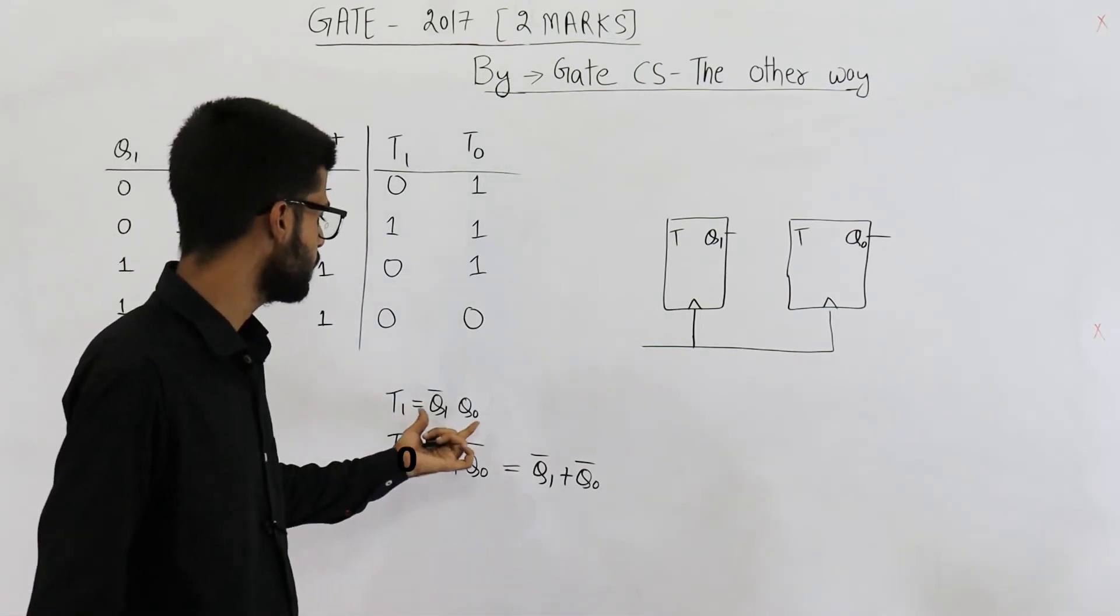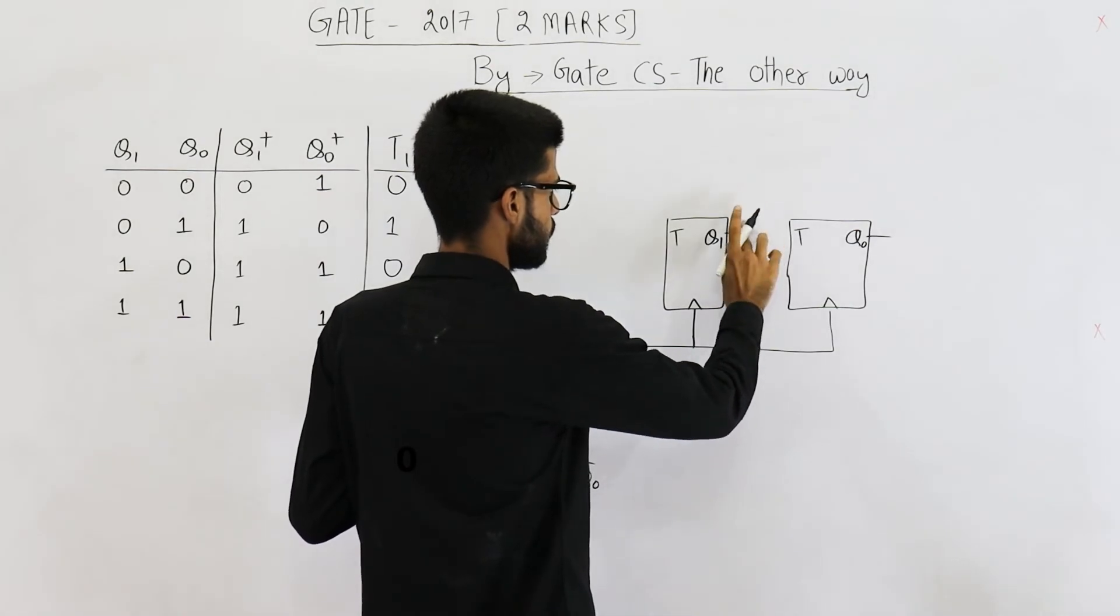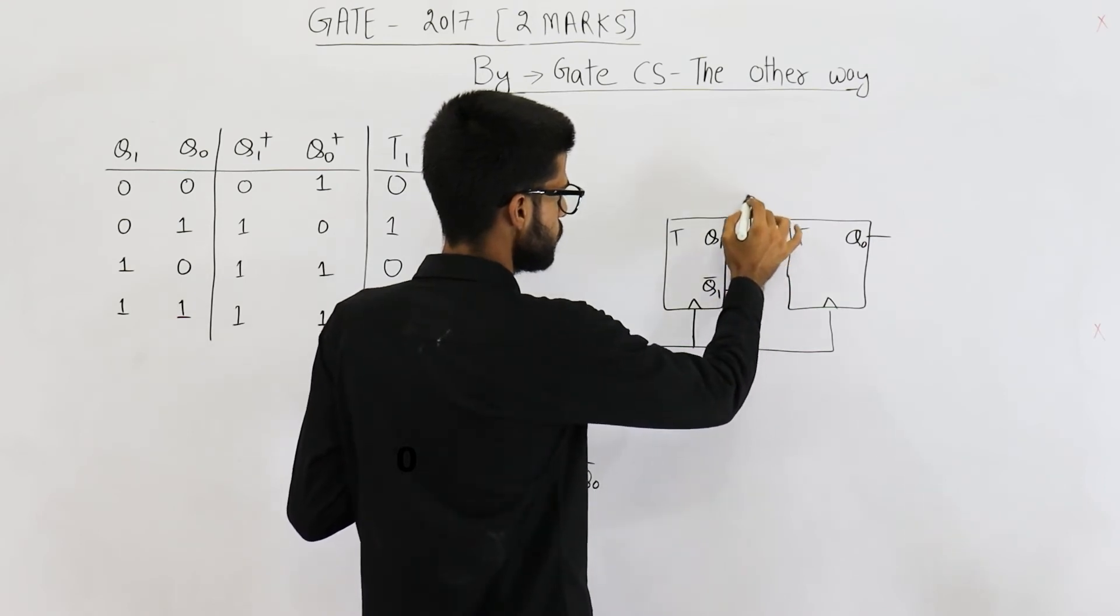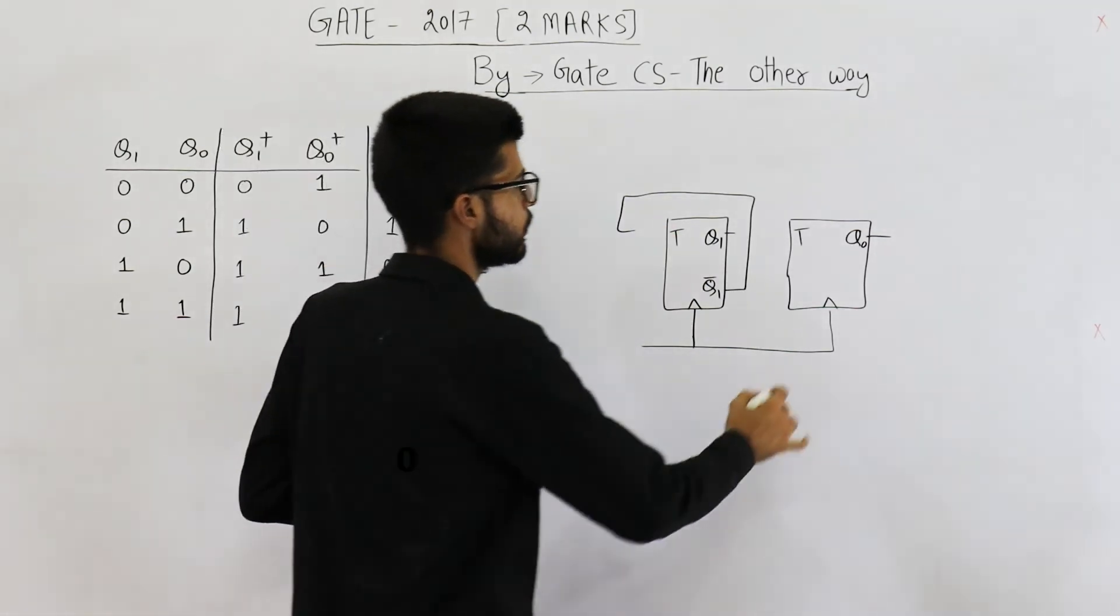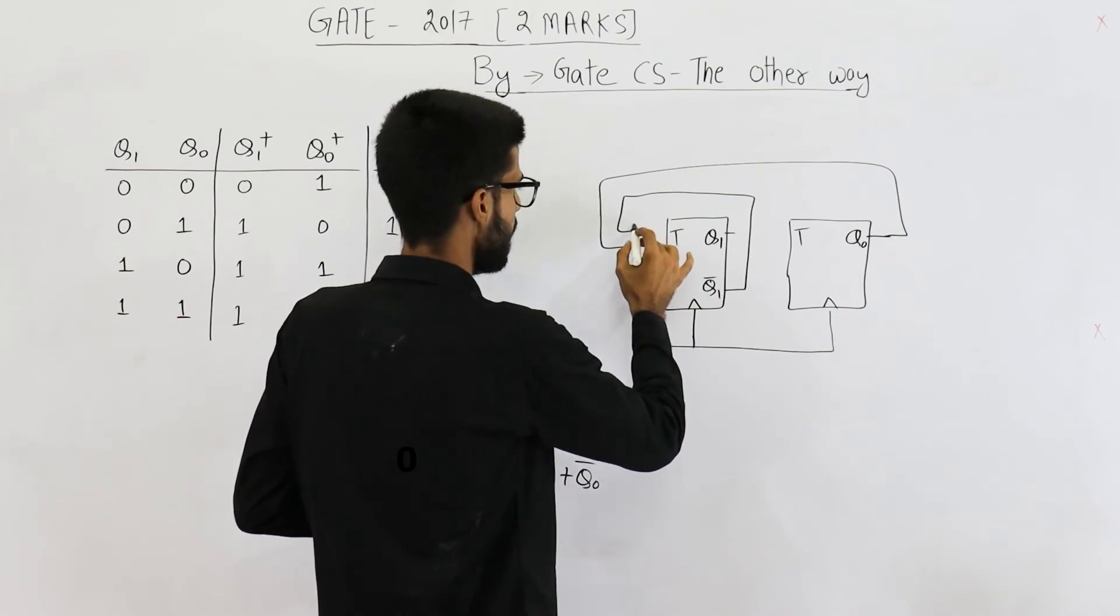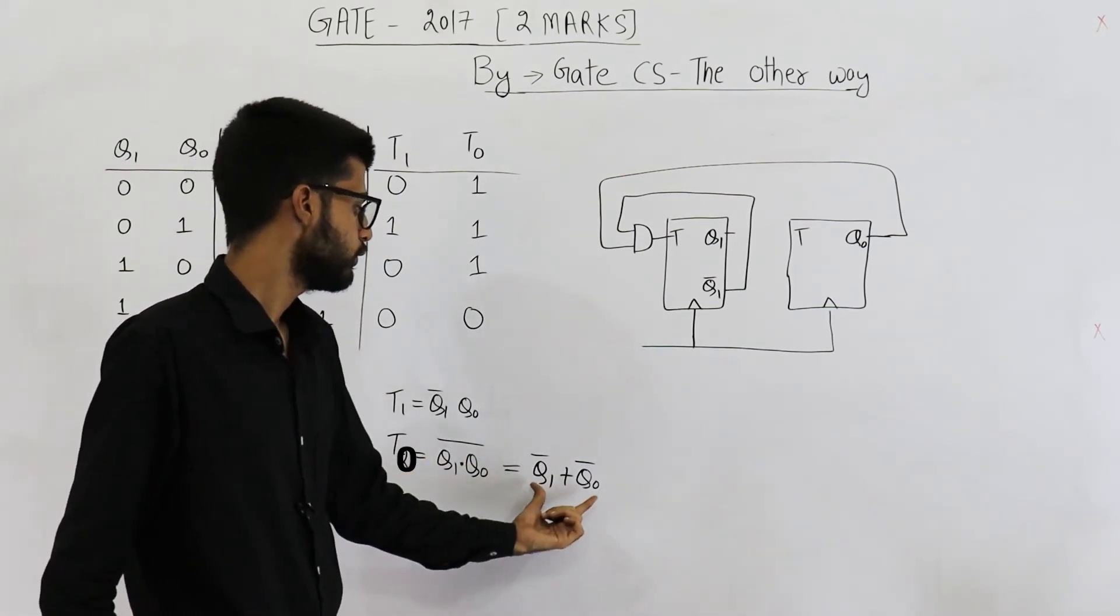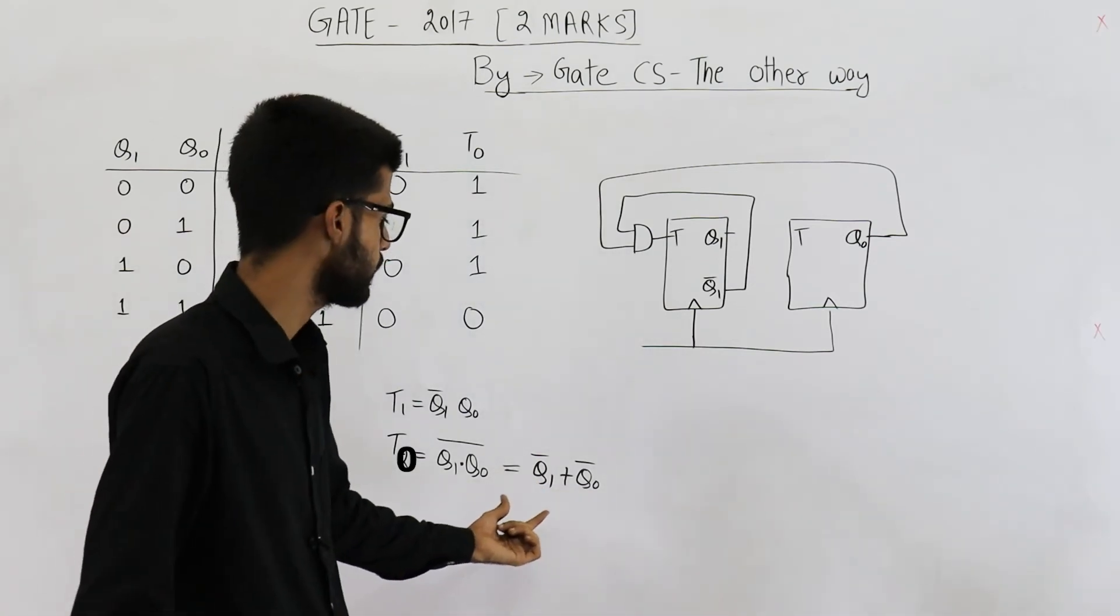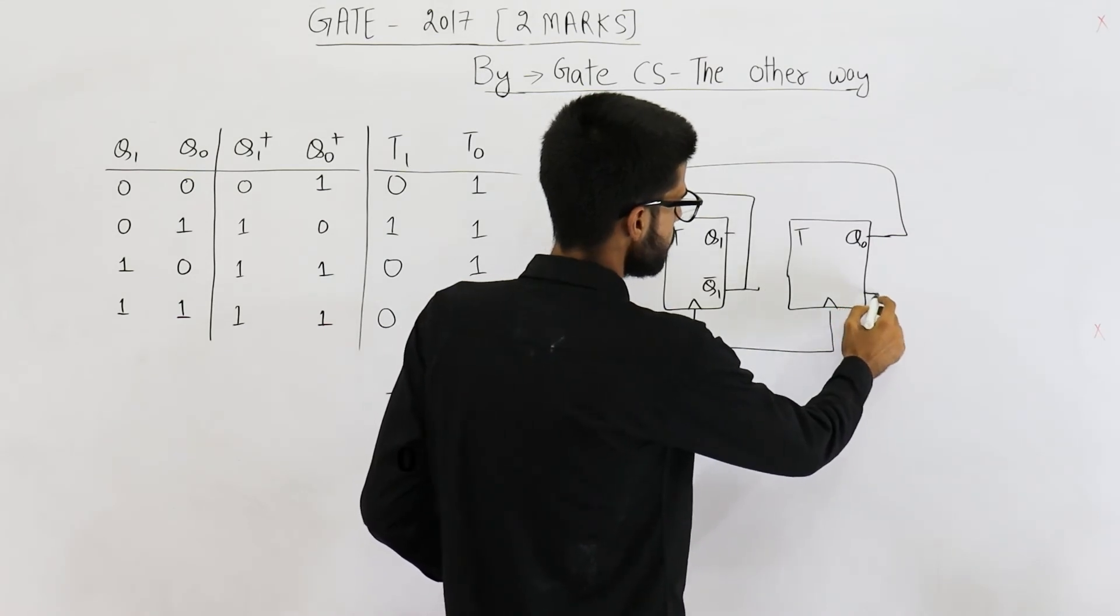That means for T1, Q1 bar is used. So, this is Q1 bar. This one is used. And Q0 is used. So this one is used. We perform AND of both of these. And it is given as the input T1. For T0, we use an OR gate for the complemented outputs. So, this is the complemented output. And this is the complemented output.